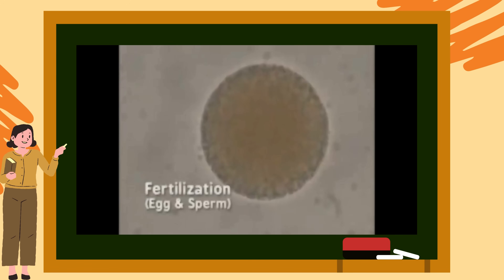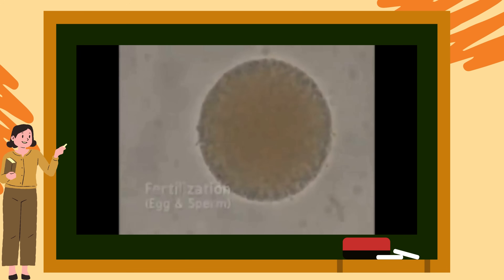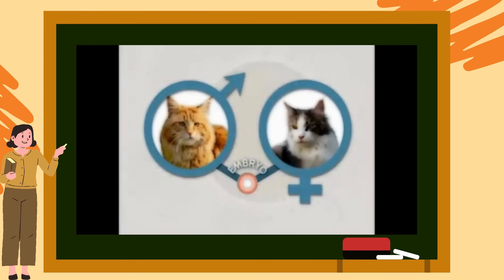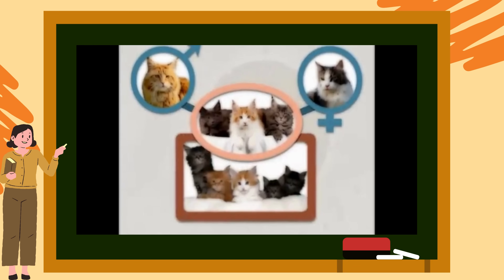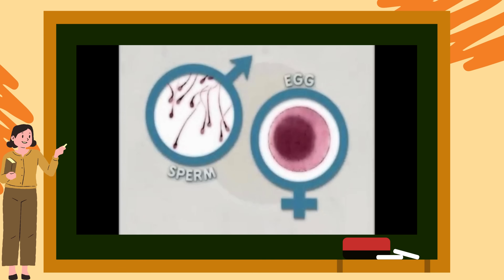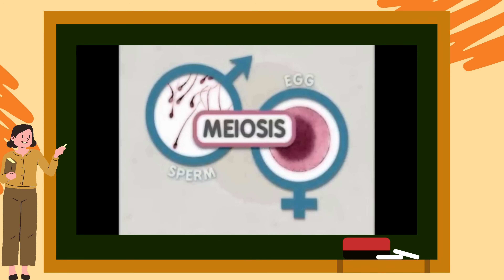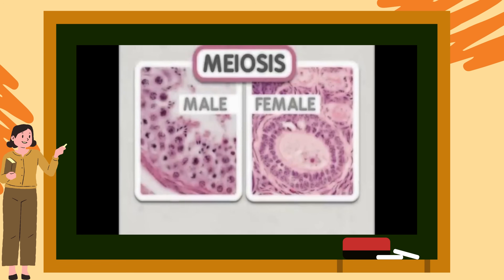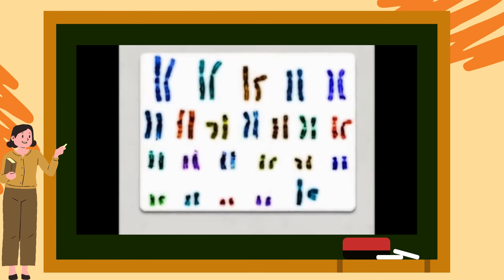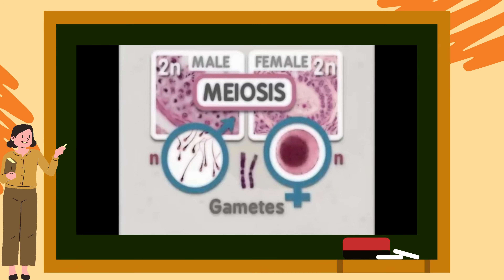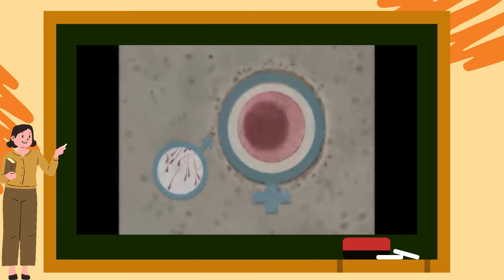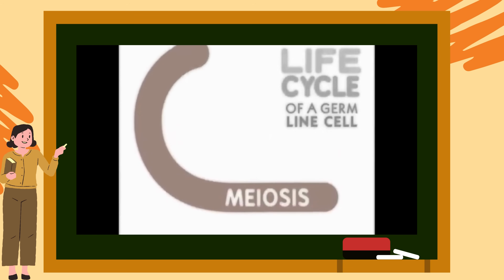Many organisms pass their genes to their offspring through sexual reproduction. This begins when two gametes unite to form an embryo that is genetically unique from the parent organisms. The embryo then grows into an adult who in turn passes their genetic information on to their own offspring. Gametes are formed through a process called meiosis. The cells that undergo meiosis to produce the gametes are called germline cells.